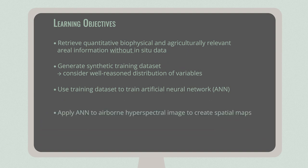This ANN will then be applied to an airborne hyperspectral image to generate spatial maps for several variables, like LAI, chlorophyll content, leaf mass area, and average leaf angle.